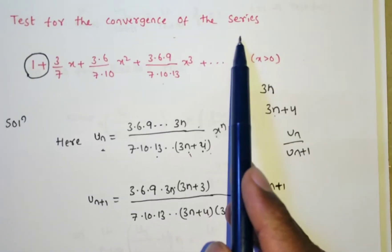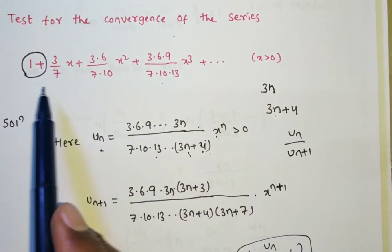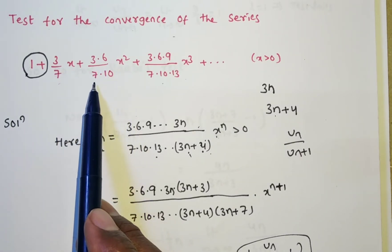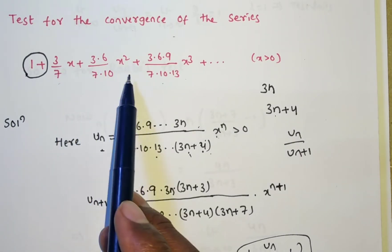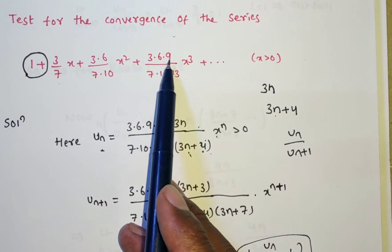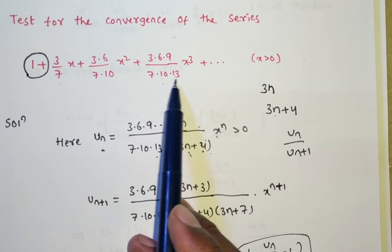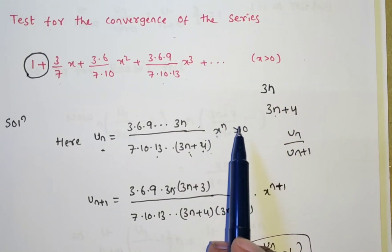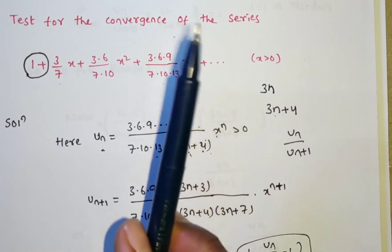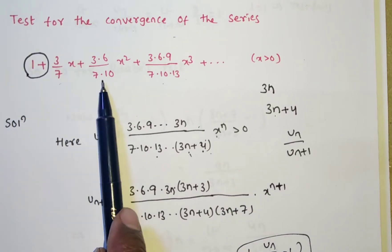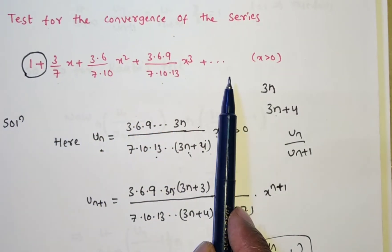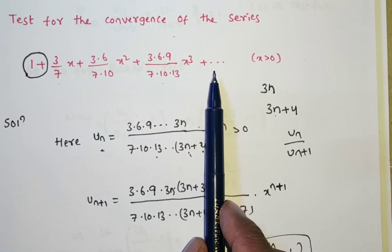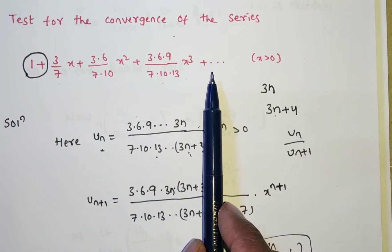Test for the convergence of the series: 1 plus 3/7 x plus (3·6)/(7·10) x² plus (3·6·9)/(7·10·13) x³ plus so on, where x is greater than 0. Here they are given the first, second, third, and fourth terms of the series, but the nth term is not given. So we have to find out the nth term.